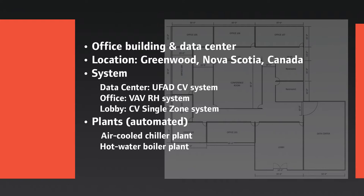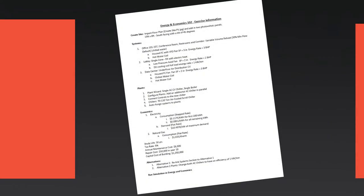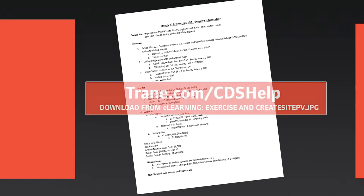As you may recall, we did not define our plants in the Load Design videos. In this video, we will be adding an air-cooled chiller plant and a hot water boiler plant. We will review the information input during the Load Design 101 training and add or modify the inputs relative to the energy analysis. Please refer to the Energy and Economics 102 Exercise Information document, found on our eLearning website, to guide you through the exercise.